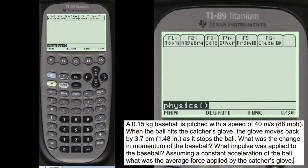I'll read it. A 0.15 kilogram baseball is pitched with a speed of 40 meters per second, 88 miles per hour, when the ball hits the catcher's glove. The glove moves back by 3.7 centimeters, 1.48 inches, as it stops the ball. What was the change in momentum of the baseball? What impulse was applied to the baseball? Assuming a constant acceleration of the ball, what was the average force applied by the catcher's glove?